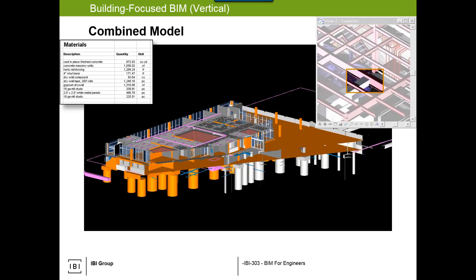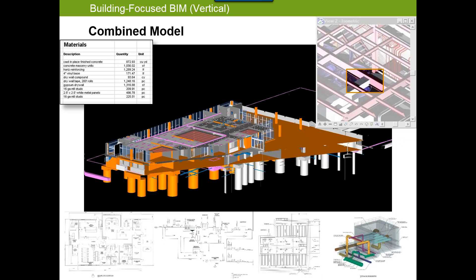BIM won't answer the question of what to do — it won't tell you to reroute the duct, raise the structure, or cut the beam in half. Decisions still have to be made. If design isn't occurring in response to what you're seeing in these clashes, something catastrophic could occur. From the model you can generate drawings, schedules, schematics, and isometrics, and take it on to further advanced visualization.